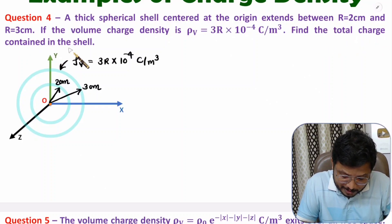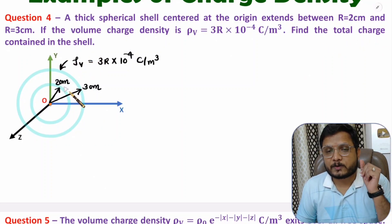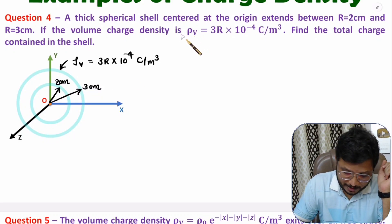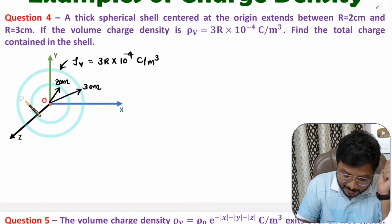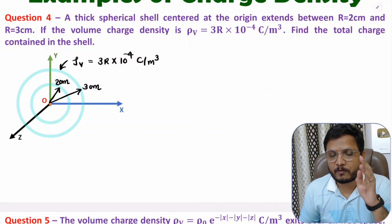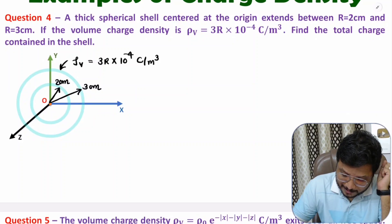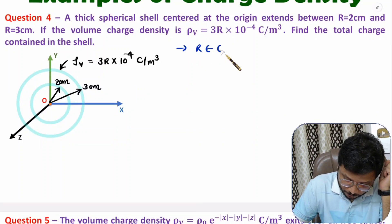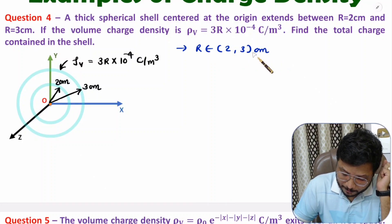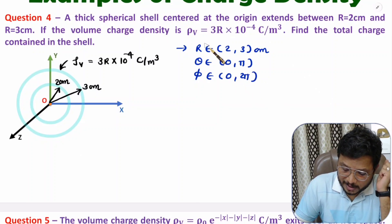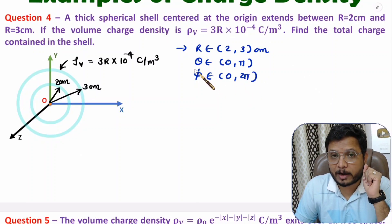We need to find the total charge contained in the shell, so we need to do a volume integration of ρv. We have a spherical coordinate system. In spherical coordinates, the radius r ranges from two centimeters to three centimeters, theta ranges from zero to pi, and phi ranges from zero to two pi.